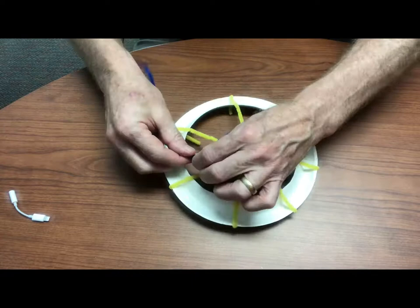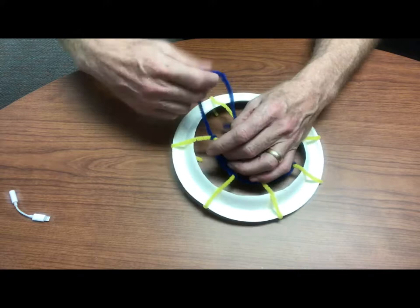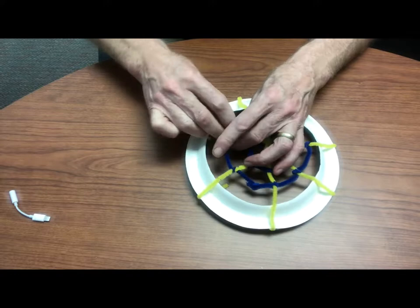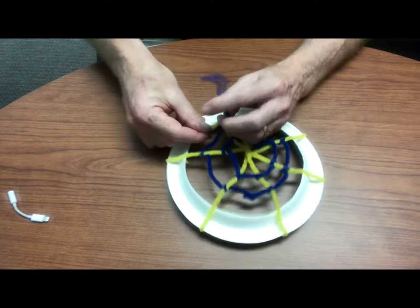And when they finish that, then they can actually start to add the circular strands starting from the inside and working their way out until they get a pretty realistic model of a spider web that they've constructed. That takes a few minutes—some kids are going to take longer than others of course—but you just got to give them some time to do that.